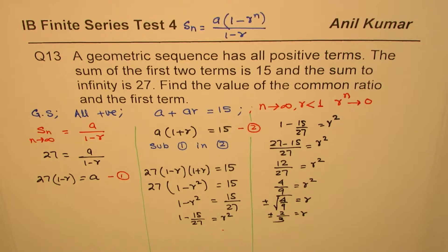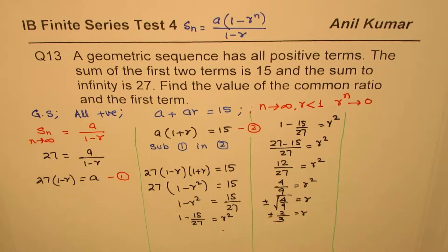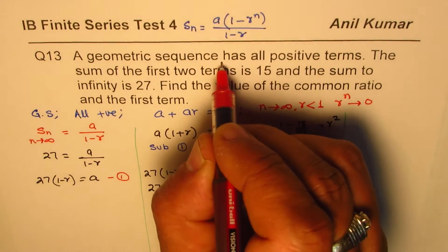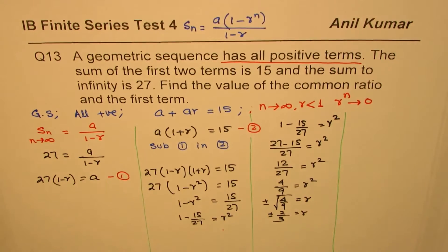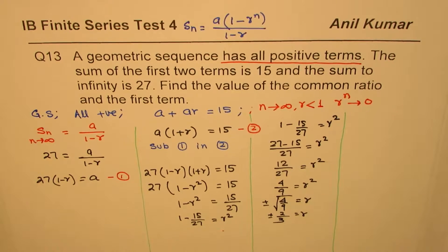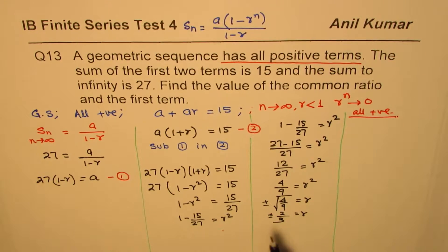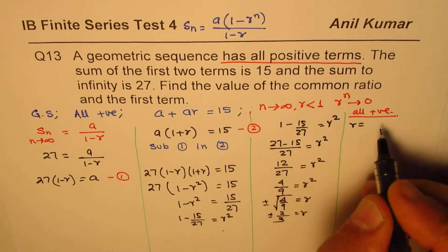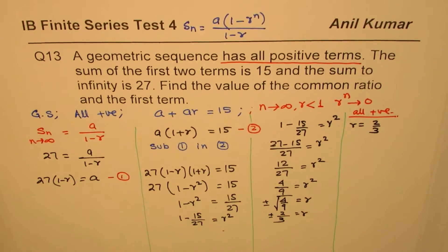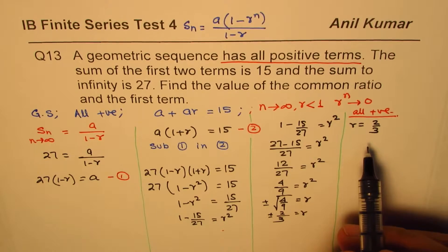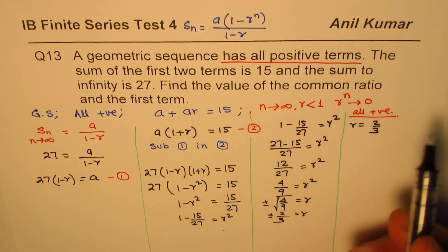So r could be +2/3 or −2/3. Let's check which is valid. The question says the geometric sequence has all positive terms. If r is negative, we'd get alternating negative values, so negative is not permitted. Therefore r must equal 2/3, since all positive terms means we cannot have negative values in the series.